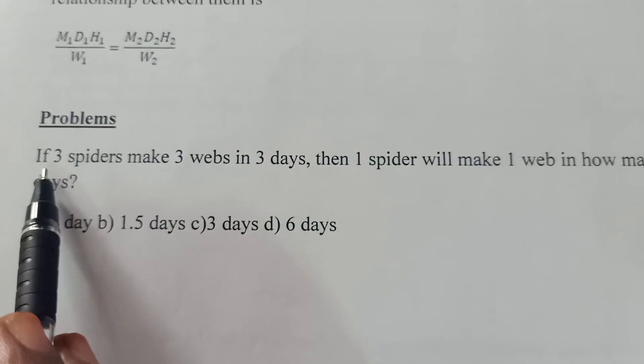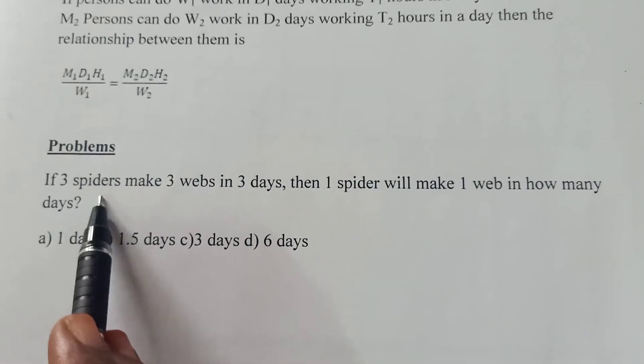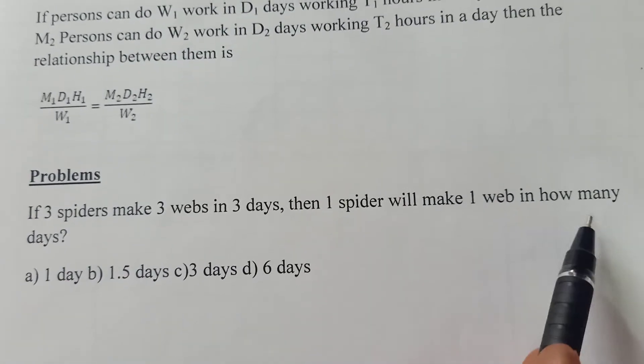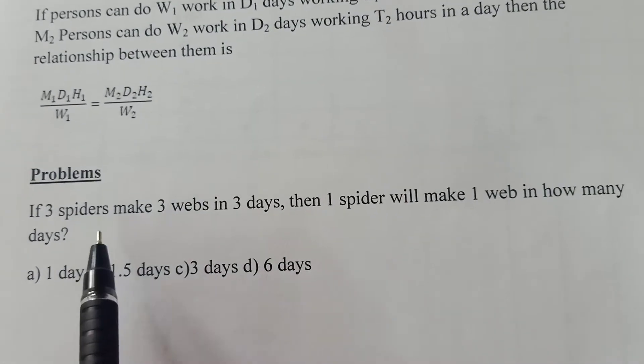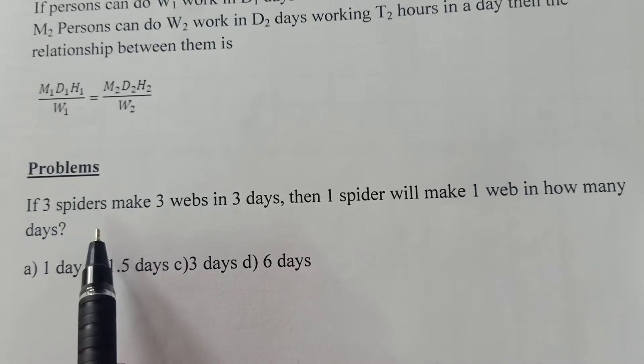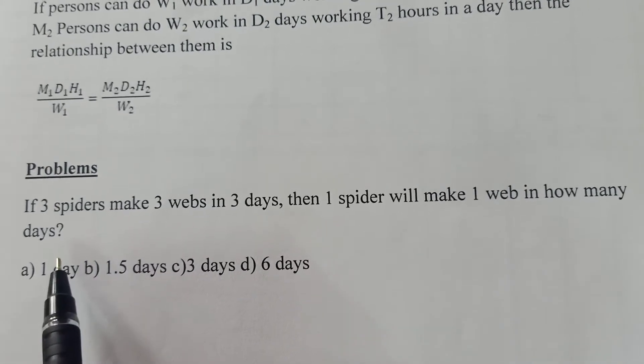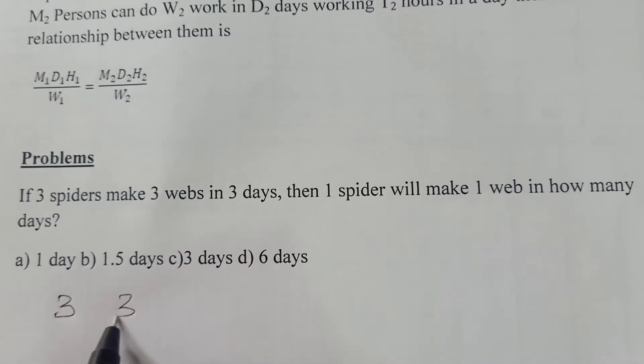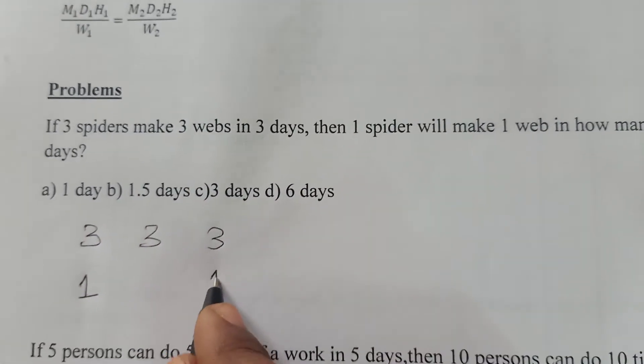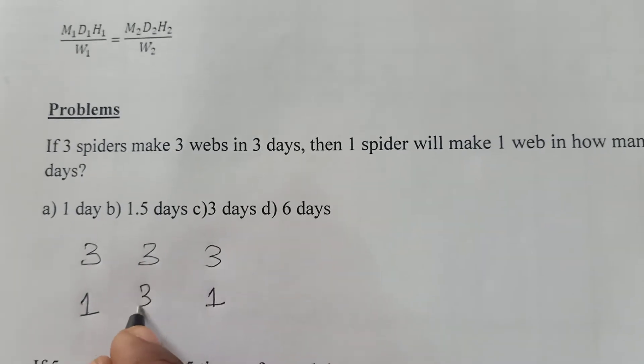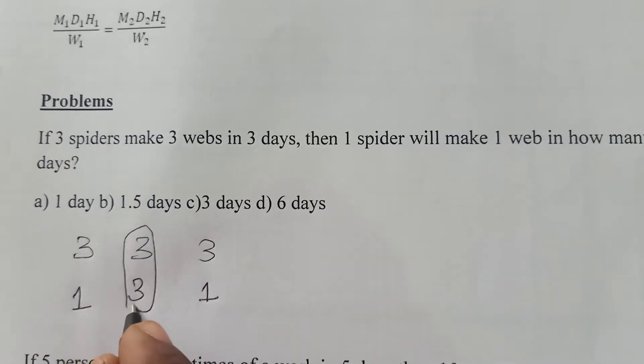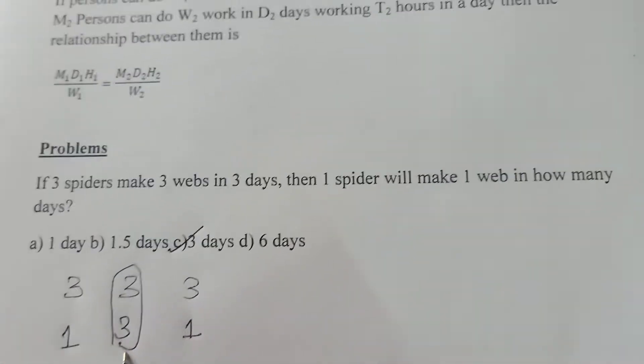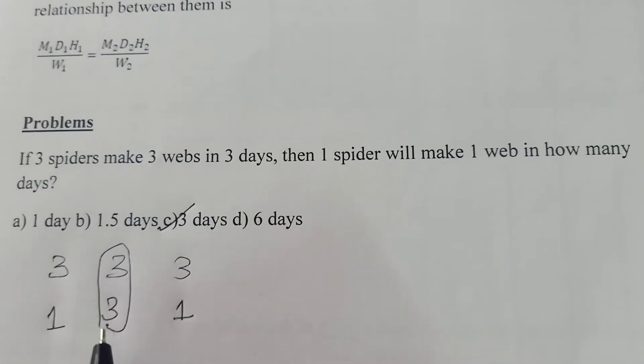Let us learn the first example. If three spiders make three webs in three days, then one spider will make one web in how many days? This is somewhat similar to the question which I have solved as an example in the previous video. If we have the same values like 3, 3, 3, then for 1 and 1 we will be having that same 3 value. For the same values we should not write the answer as 1, 1, 1. We should find the answer.